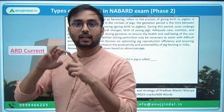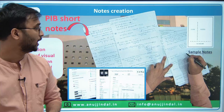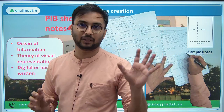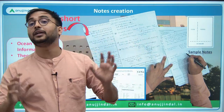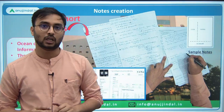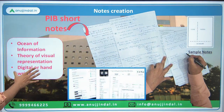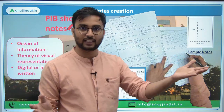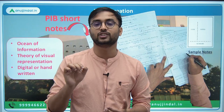Current affairs has no limit — there is a vast amount of information. So note creation is essential. Imagine: Spotlight magazine is 100 pages monthly, PIB documents are 150 pages per month, government schemes are another 150 pages per month. If you're covering one year or six months of current affairs, you're looking at 1,000 pages. How will you revise and retain 1,000 pages? That is why note-making becomes very important. You can make notes both digitally and handwritten. Short notes are necessary so that you can revise efficiently.